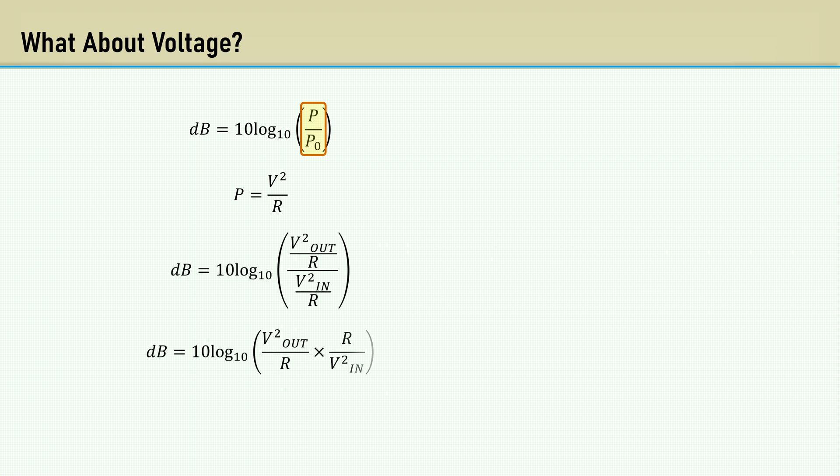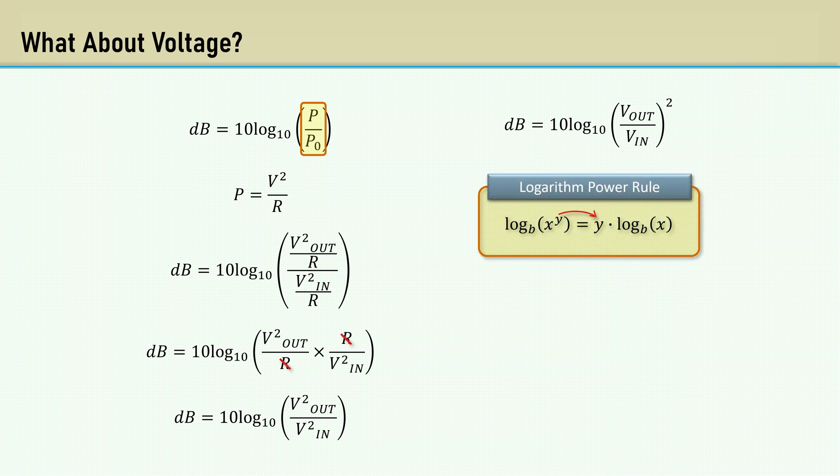Cross multiply to get rid of the fraction. The r's cancel, and we get 10 log of the ratio of the voltage out squared over the voltage input squared. We can move the exponent 2 outside the parentheses. Then, using the logarithm power rule, we can move the 2 over to the front, thus multiplying the 10 by 2, and getting 20 log V out over V in, the decibel formula for voltage.